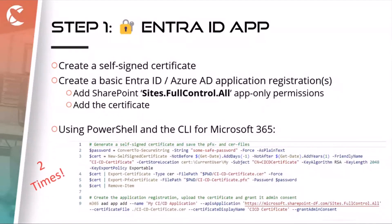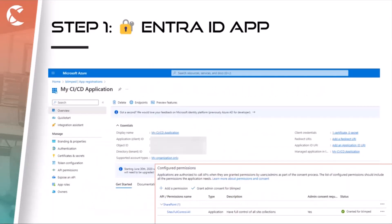I do this twice because in our scenario we use an acceptance tenant and a production tenant — two separate SharePoint environments with two separate Azure AD tenants. So I need to create two apps and two certificates, and write down the details. You end up with a simple application that is just a container for your permissions in each tenant.